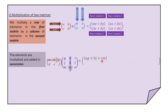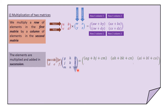Moving to the second column of the second matrix, we have A, B, C again multiplied by H, K, N, giving the element AH plus BK plus CN: A times H plus B times K plus C times N, all added together — the element in the first row, second column of the resulting matrix. Lastly for that row, we multiply A, B, C with I, L, O, giving us the final element on the first row of the resulting matrix.